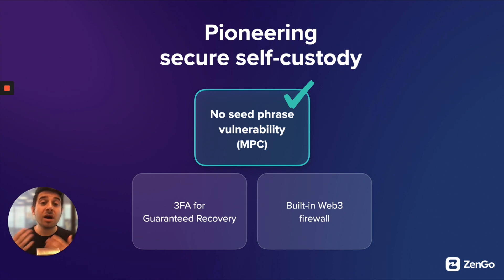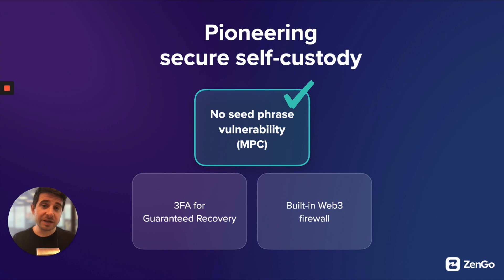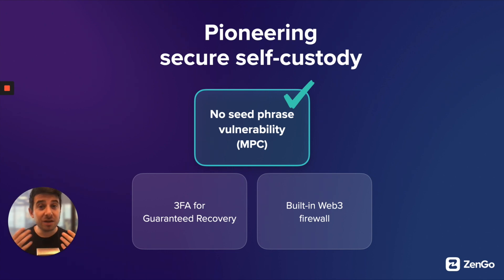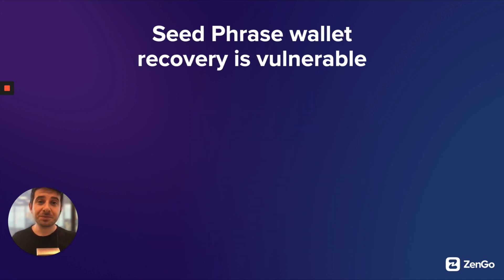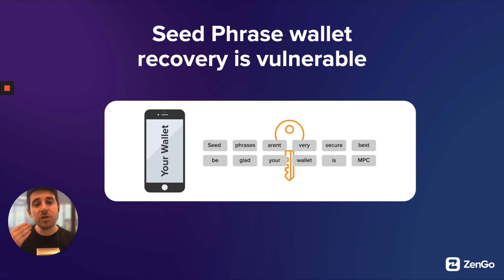Now let's talk about what it means to recover your wallet if your phone gets lost, stolen, or if you're upgrading to a new device. With a traditional wallet, you'd use your seed phrase — those 12 to 24 words — to recover your account. The problem is anyone else who has access to that seed phrase can also recover your account and steal your assets. Because Zengo doesn't use a seed phrase, let's discuss how we support account recovery. Seed phrase wallet recovery is vulnerable — anybody with those 12 to 24 words can take your assets.